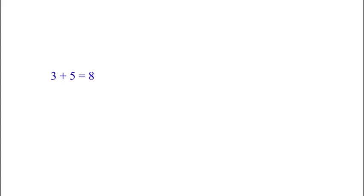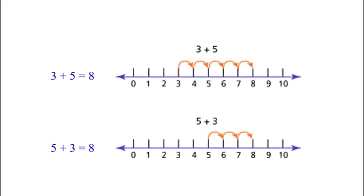Then 3 plus 5 is equal to 8, and 5 plus 3 is equal to 8. For 3 plus 5, we start from 3 and move 5 unit distances towards the right and reach at 8. Similarly, for 5 plus 3, we start from 5 and move 3 units towards the right and reach at 8. So 5 plus 3 is equal to 8.